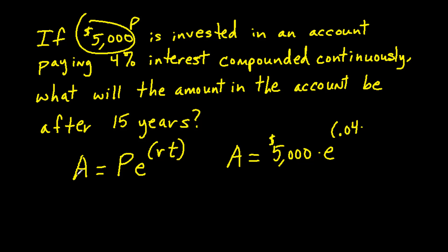Now we just need to type that into a calculator. $5,000 times the e to the x button to the power 0.04 times 15. Our answer rounded to the nearest cent is $9,110.59. So the $5,000 investment turned into $9,110.59.